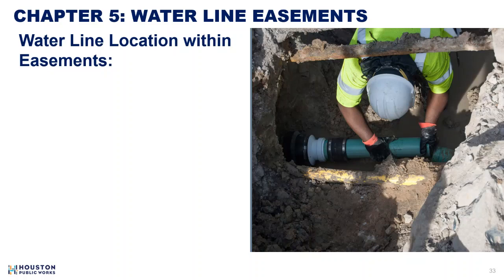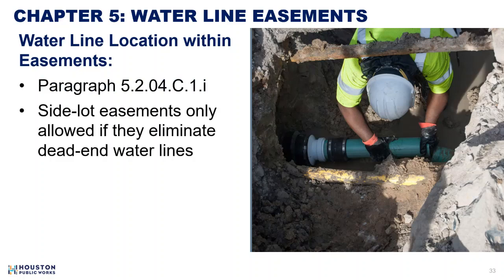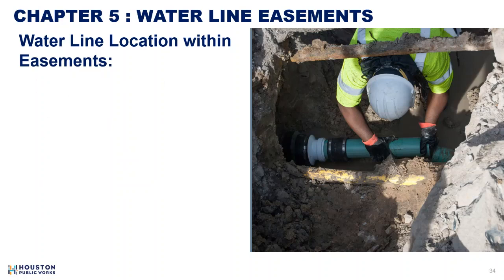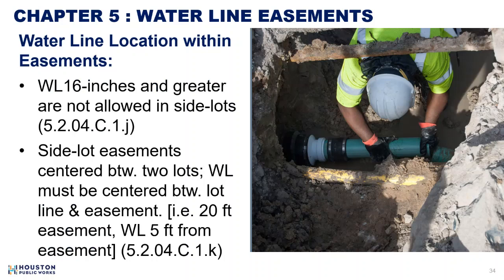There are a few other waterline easement requirements that were added. Paragraph 5.2.04.C.1i restricts the use of side lot water line easements to be used only if they eliminate dead-end water lines, and requires that the side lot easement must be accessible for maintenance. Water lines 16 inches in diameter and greater are not allowed inside lots. For side lot easements centered between two lots, the water line must be centered between the lot line and the easement — for example, in a 20-foot easement, the water line must be 5 feet from the easement boundary. Placing the water line on the lot line is no longer allowed.